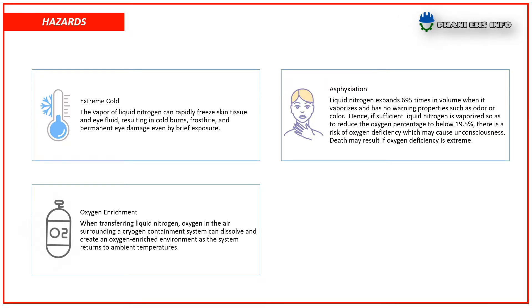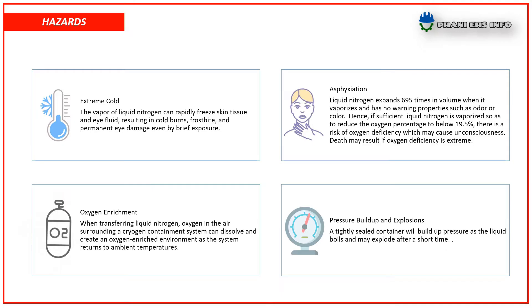Oxygen enrichment — when transferring liquid nitrogen, the oxygen in the air surrounding a cryogenic containment system can dissolve and create an oxygen-enriched environment as the system returns to ambient temperatures. Pressure buildup and explosions — a tightly sealed container will build up pressure as the liquid boils and may explode after a short time.